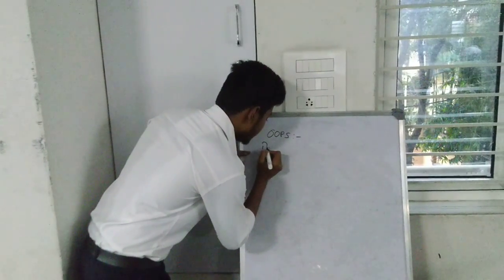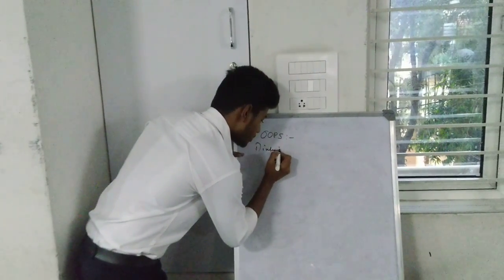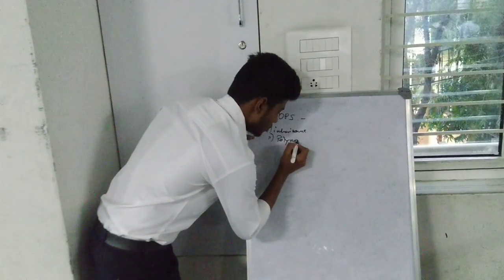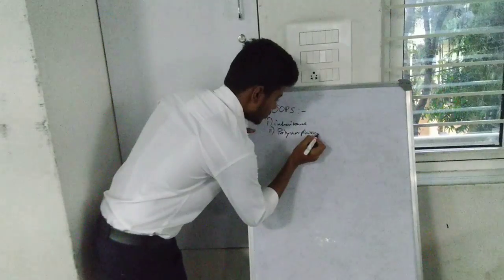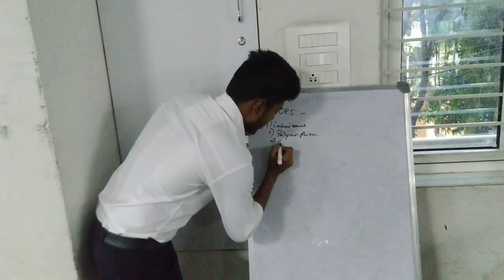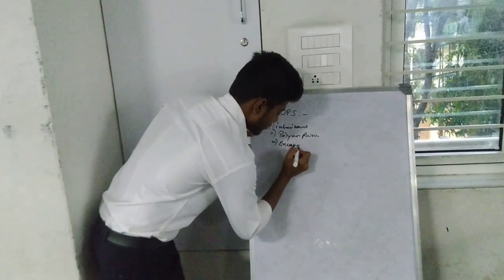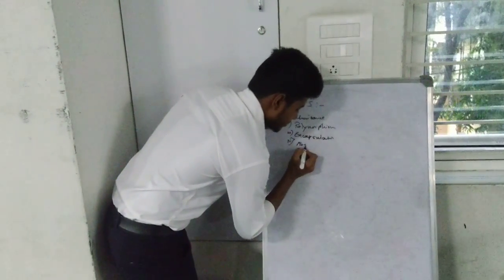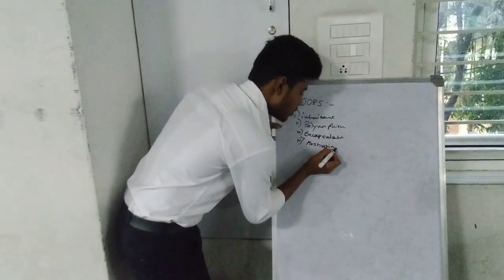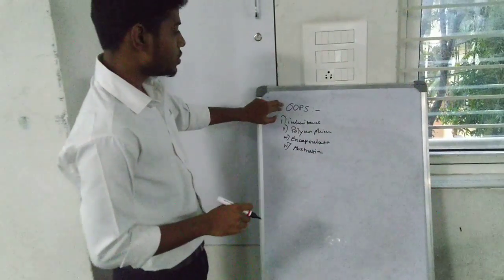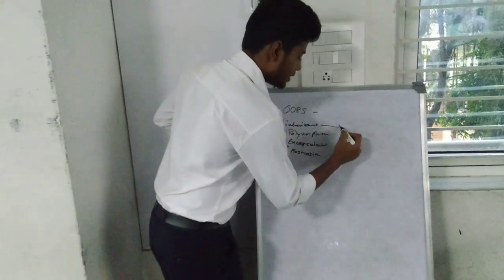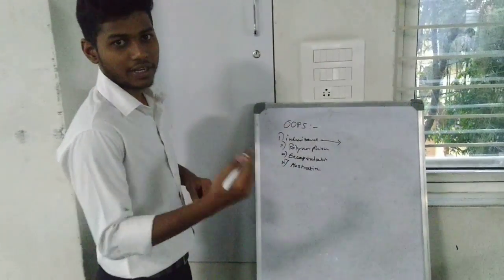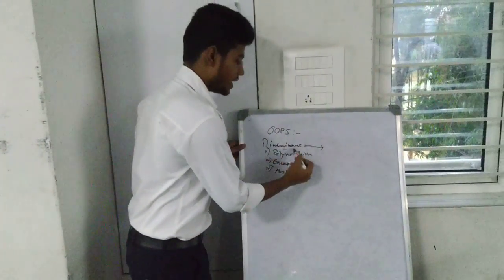First, inheritance. Second, polymorphism. Encapsulation. And abstraction. So these are the four pillars we are using in OOPs concept. In inheritance, a class is called to access the property of another class. So we are using inheritance.